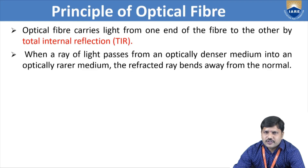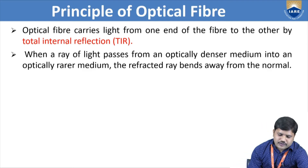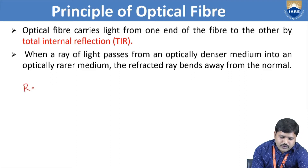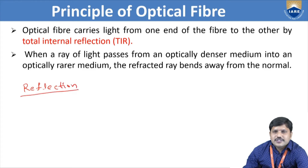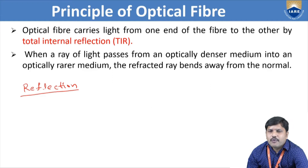Before total internal reflection, we are going to recall the basics of ray optics — those are reflection and refraction. First of all we see reflection. When rays are incident on the boundaries or barriers of a region, the light bounces back. The bouncing back of light rays when it is incident on boundaries or barriers is known as reflection.